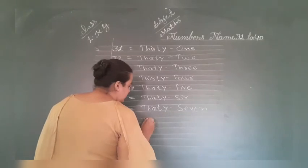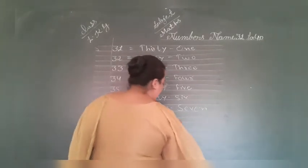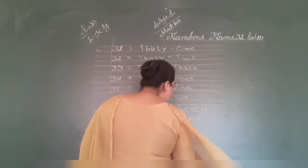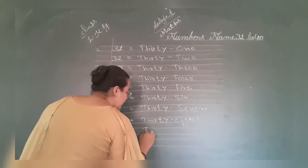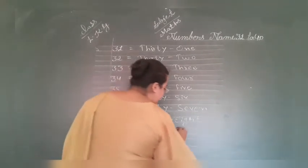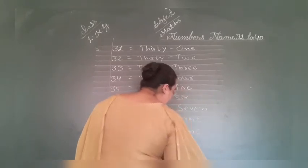38, THIRTY 30, EIGHT 8, 38. THIRTY 30, NINE 9.